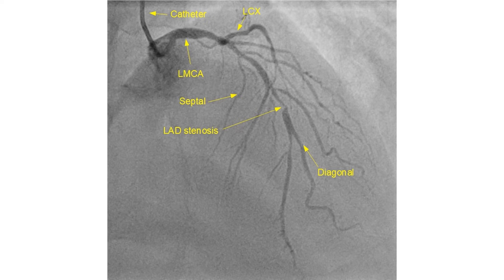There is mild stenosis of the distal left anterior descending coronary artery after the origin of the terminal diagonal. The terminal diagonal and distal LAD beyond the bifurcation are almost of the same size. The terminal diagonal is free of significant disease.